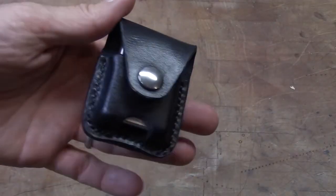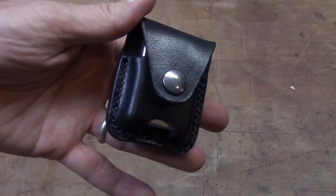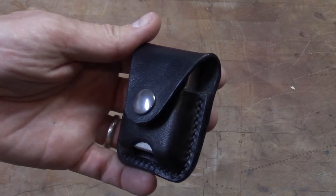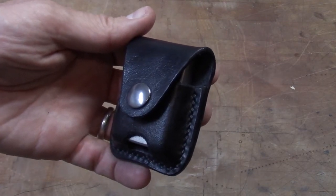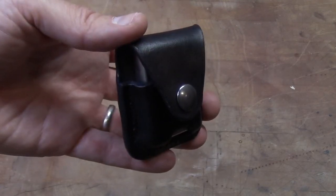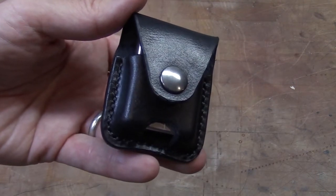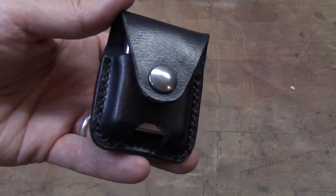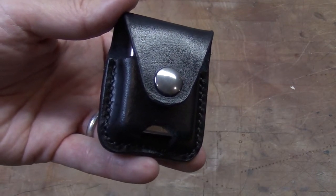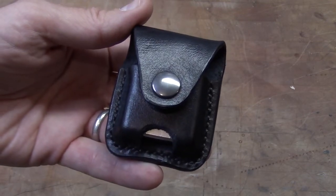So there you go, a very simple Zippo lighter case, very formal. Again, you could make accents on it all you wanted, but this design was set up so that there was no special tools required or special snaps or clips or anything like that.